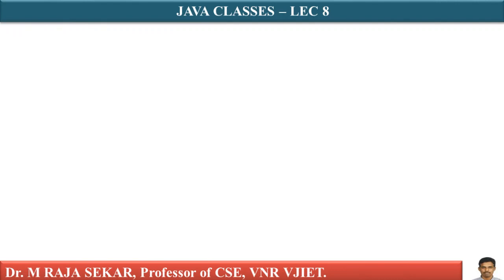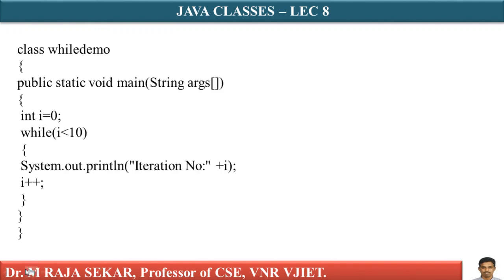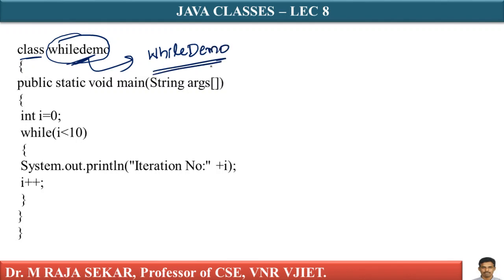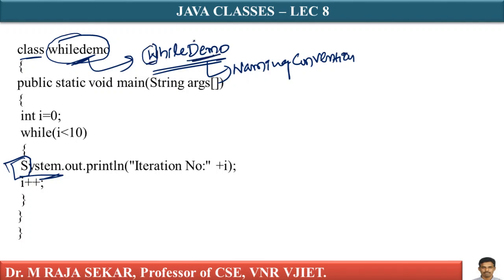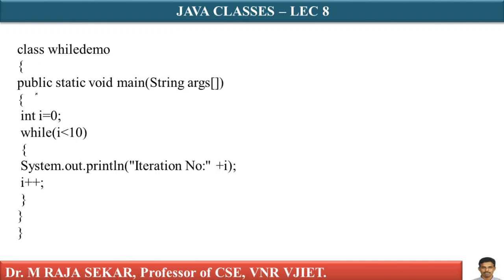Let me show a simple iteration statement example. The class name is WhileDemo. Here I am not following naming conventions strictly. If there are two words in a class name, the first letter of each word must begin with a capital letter. Following naming conventions is optional, but all built-in classes follow them — for example, System starts with a capital letter.